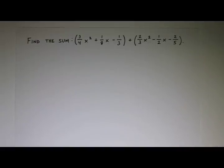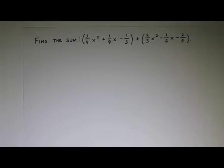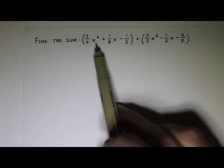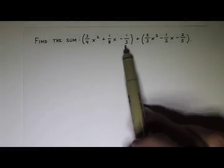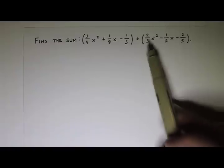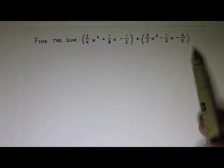We want to find the sum of these two polynomials. This one is 3/4 x² + 1/8 x - 1/3 plus, and then this polynomial is 2/3 x² - 1/2 x - 2/5.